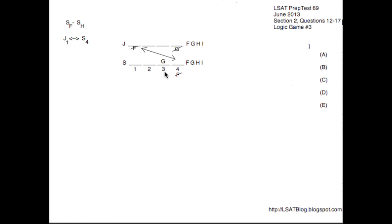They tell us that the first school that gets juices is the fourth school that gets snacks. So I put an arrow between the J1 space and the S4 space, because those spaces will have the same variable as each other. Because snacks are going to F before snacks go to H, I put down that F will never be on S4 — and therefore we can infer that F will never be on J1, since J1 and S4 share the same variable. We can also say that H is never on S1.